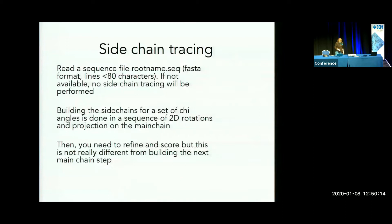Shell XE will now read the FASTA file with the sequence. It should limit lines to 80 characters, but that can be changed. If it doesn't find the file or there's any problem, it will warn you that it's not going to be able to fit sidechains and continue — so as not to disrupt any pipelines like MrBUMP or AMPLE that are also using Shell XE.